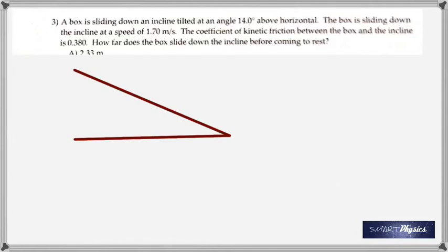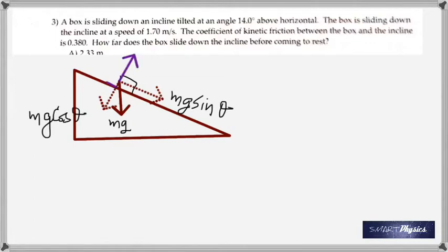Number 3, a box is sliding down an incline tilted at an angle 14 degrees above the horizontal. The box is sliding down the incline at a speed of 1.70 meter per second. The coefficient of kinetic friction is 0.380. How far does the box slide down the incline before coming to rest? First of all, you've got to find the acceleration. Now let's look at the forces acting. The weight acts vertically down resolved into mg sine theta and mg cos theta. And then you have the normal reaction Fn and friction which is opposite to the motion.